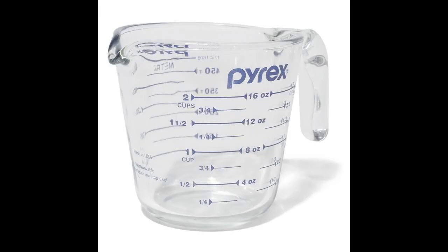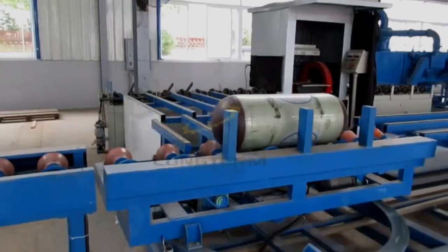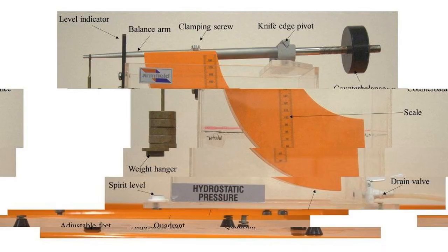If a point in the fluid is thought of as an infinitesimally small cube, then it follows from the principles of equilibrium that the pressure on every side of this unit of fluid must be equal.